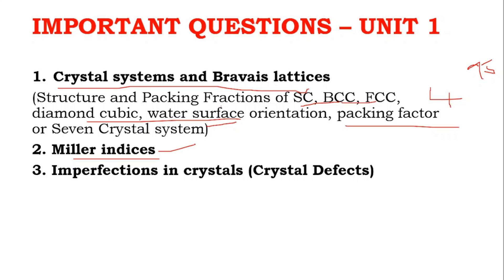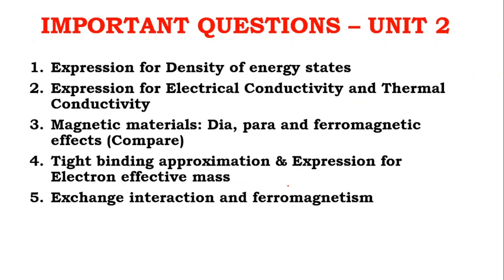The third important question in Unit 1 is imperfection in crystals. This typically carries 7 to 8 marks and is a confirmed question. For Unit 1 overall, these three questions — packing factor, Miller indices, and imperfections in crystals — are the ones to focus on.